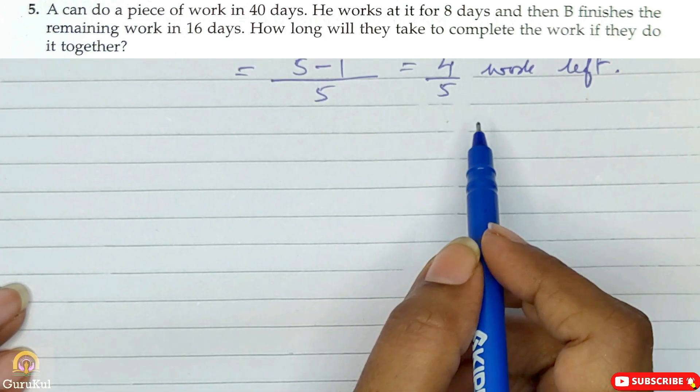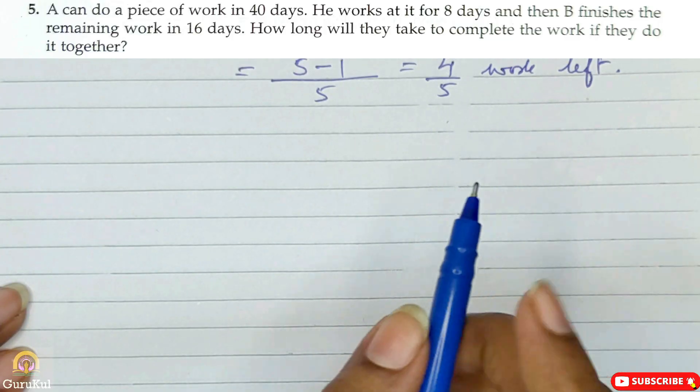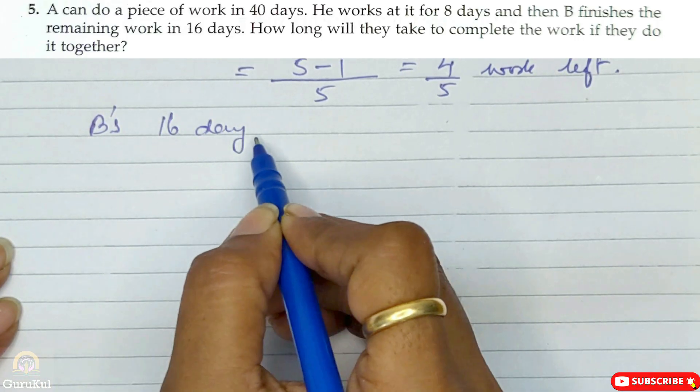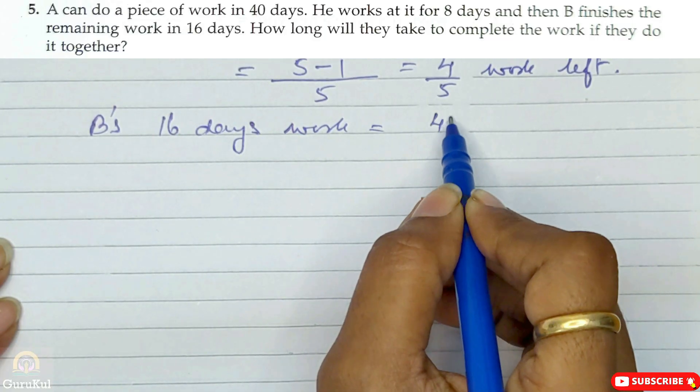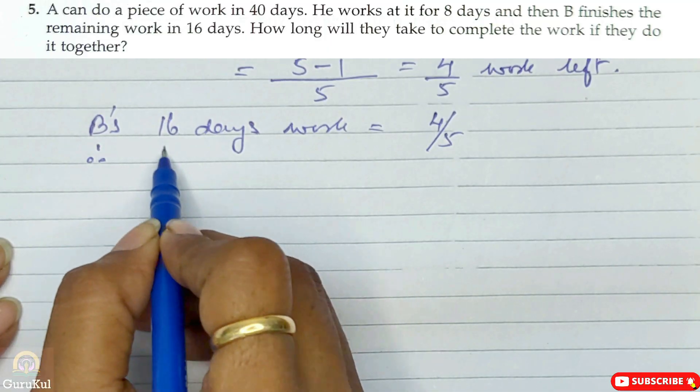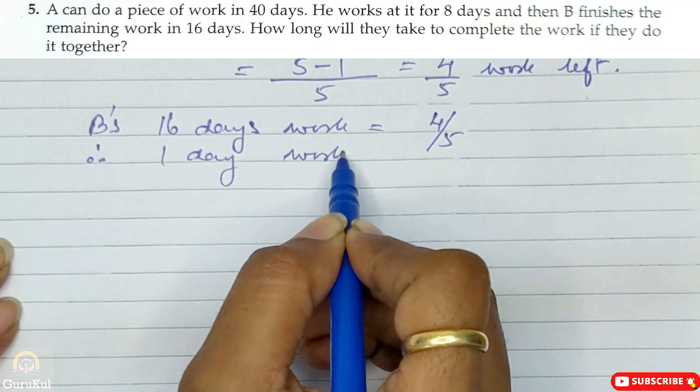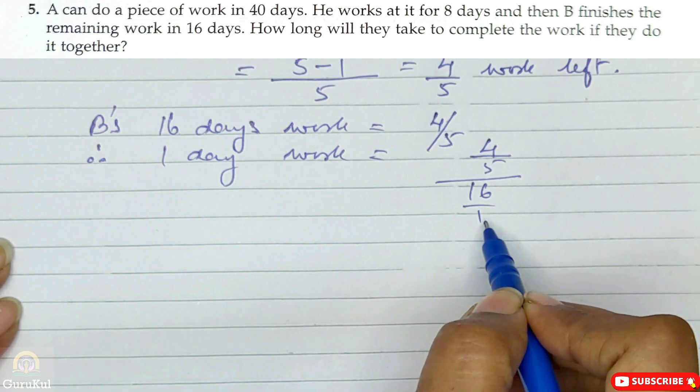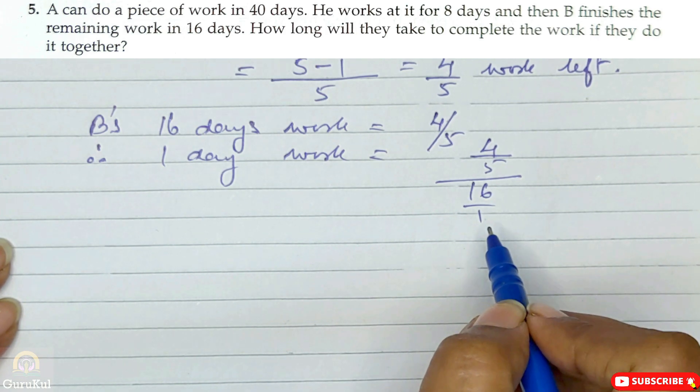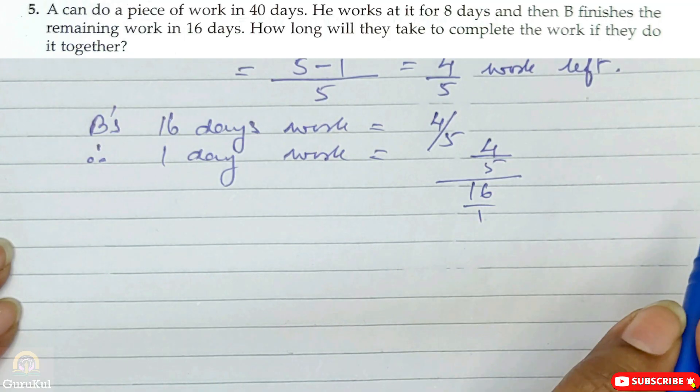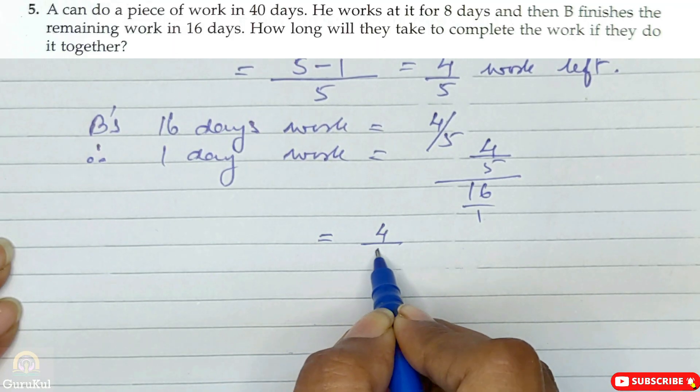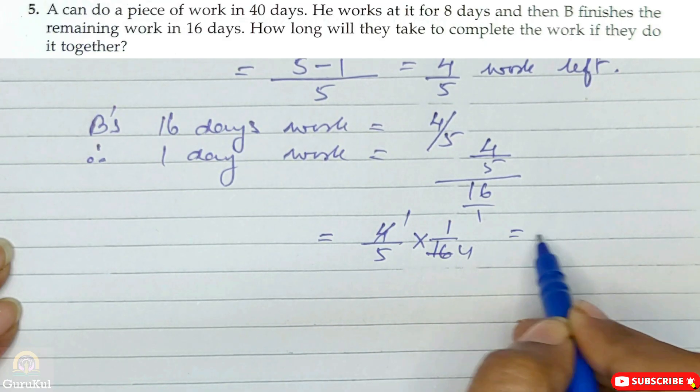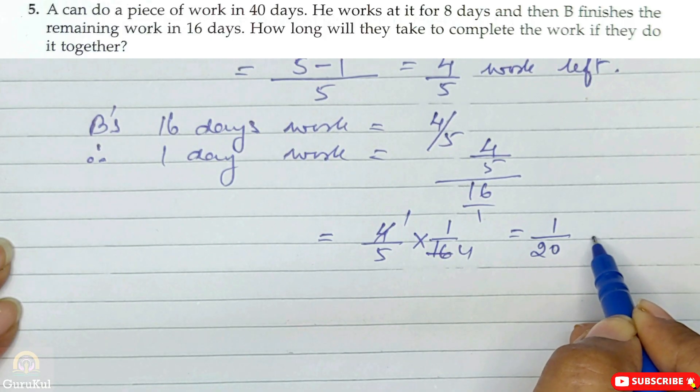B finishes the remaining work in 16 days. So B's 16 days work is equal to 4 by 5. Therefore one day work will be 4 by 5 by 16 by 1. That means denominator is 1. This becomes 4 by 5 into 1 by 16. Reducing, 4 ones are, 4 fours are, that gives us 1 by 20 work.